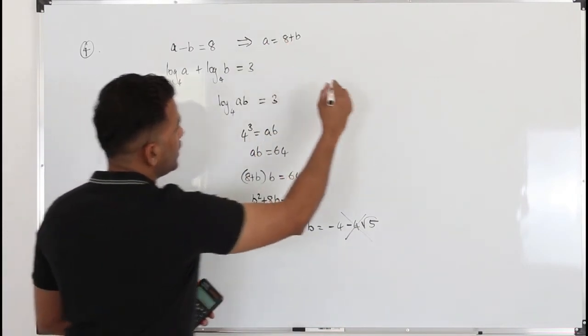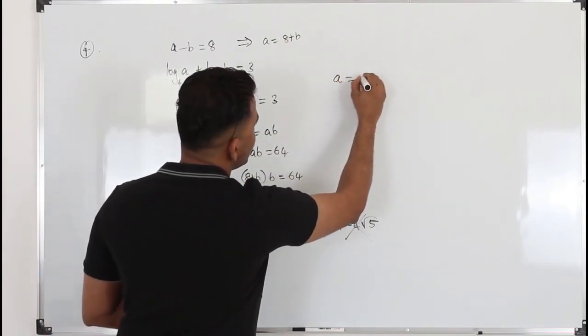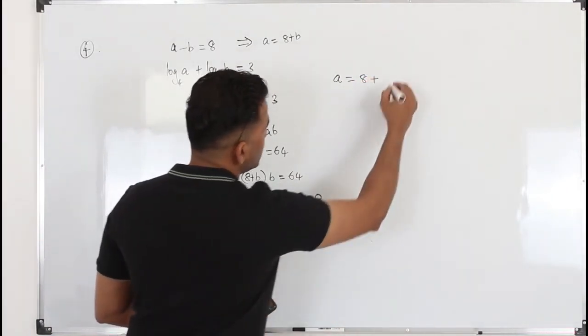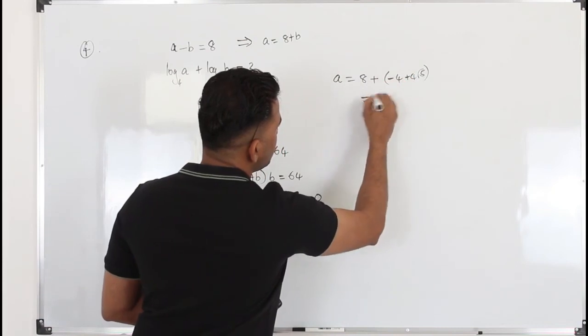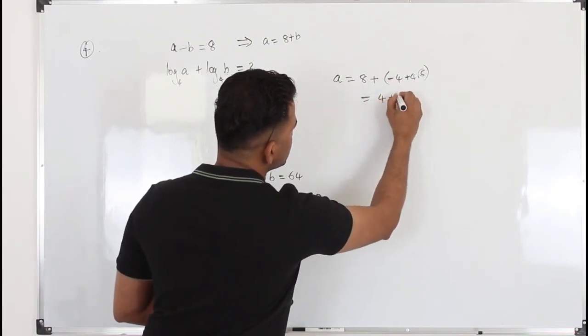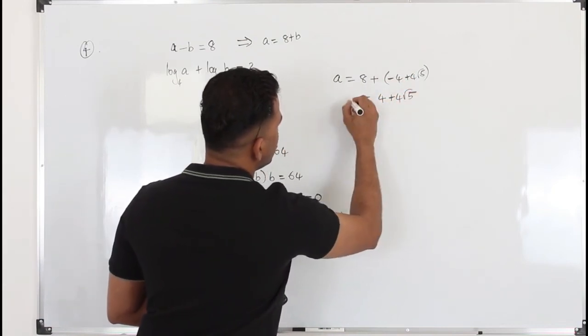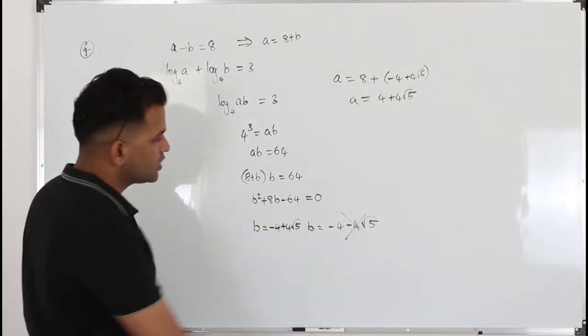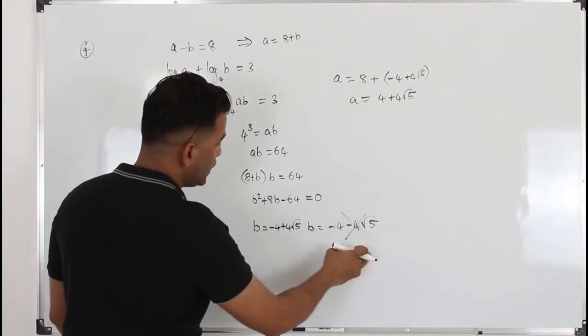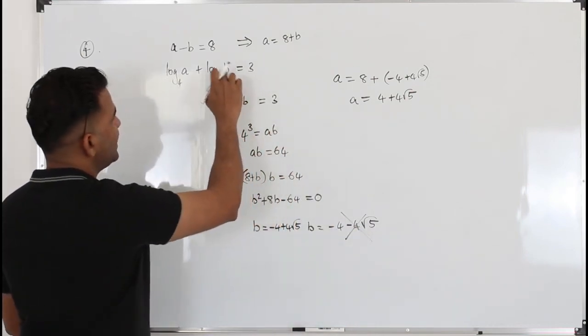Now plug in the value here to find a. a equals 8 plus negative 4 plus 4 root 5. So 8 minus 4 is 4. 4 plus 4 root 5 will be the value of a. So we got a and b. You are not supposed to take the negative value because log cannot be negative.